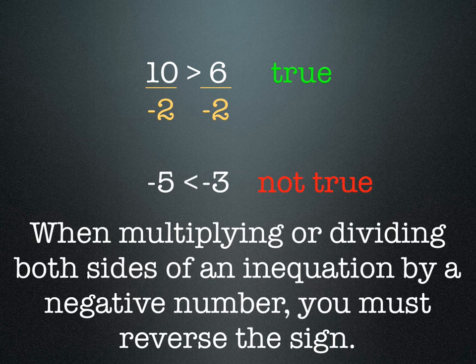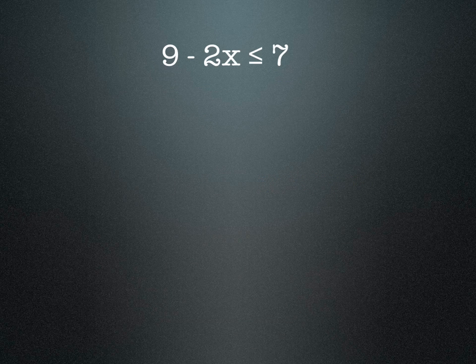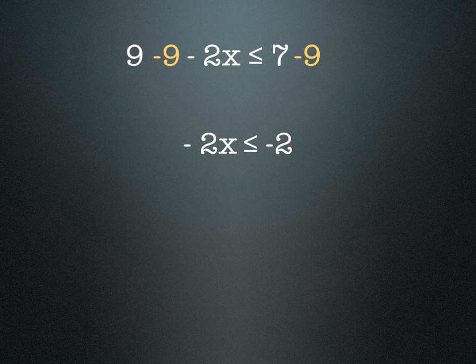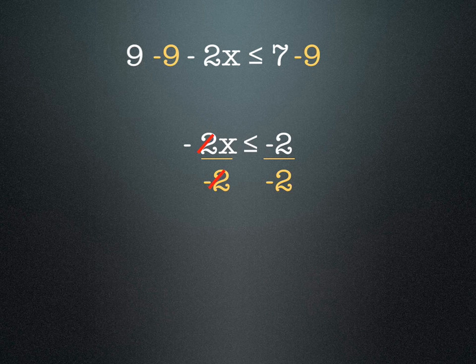The rule is: when multiplying or dividing both sides of an inequation by a negative number, you must reverse the sign. For example, 9 minus 2x is less than or equal to 7. We subtract 9 from both sides to get negative 2x is less than or equal to negative 2. Now we divide both sides by negative 2 — the negatives cancel on the left, but we must change the direction of the sign. So our answer is x is greater than or equal to 1.